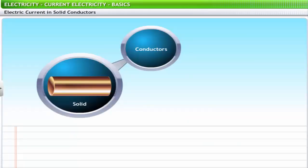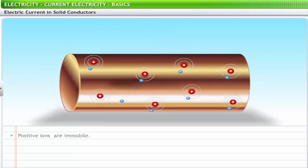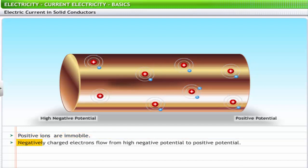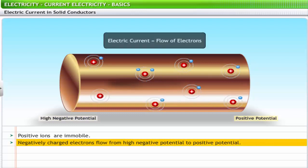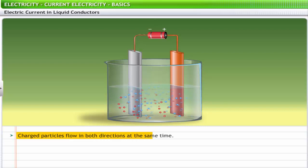Conductors can be in solid as well as liquid states. In solid conductors, positive ions are immobile and only the negatively charged electrons flow from high negative potential to positive potential. This flow of electrons is known as electric current. In liquid conductors, the current is caused by the flow of charged particles in both directions at the same time.